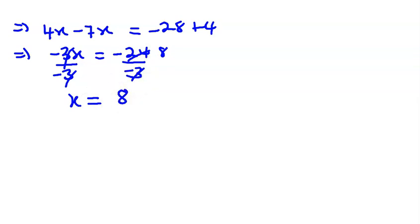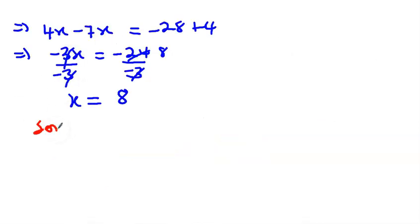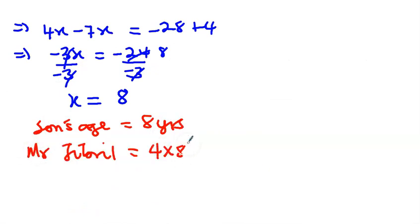Let's go back to the question. We have to find the number of years for which Mr. Jabril's age will be twice his son's age. So son's age is eight years and Mr. Jabril is four times eight which is thirty-two years.